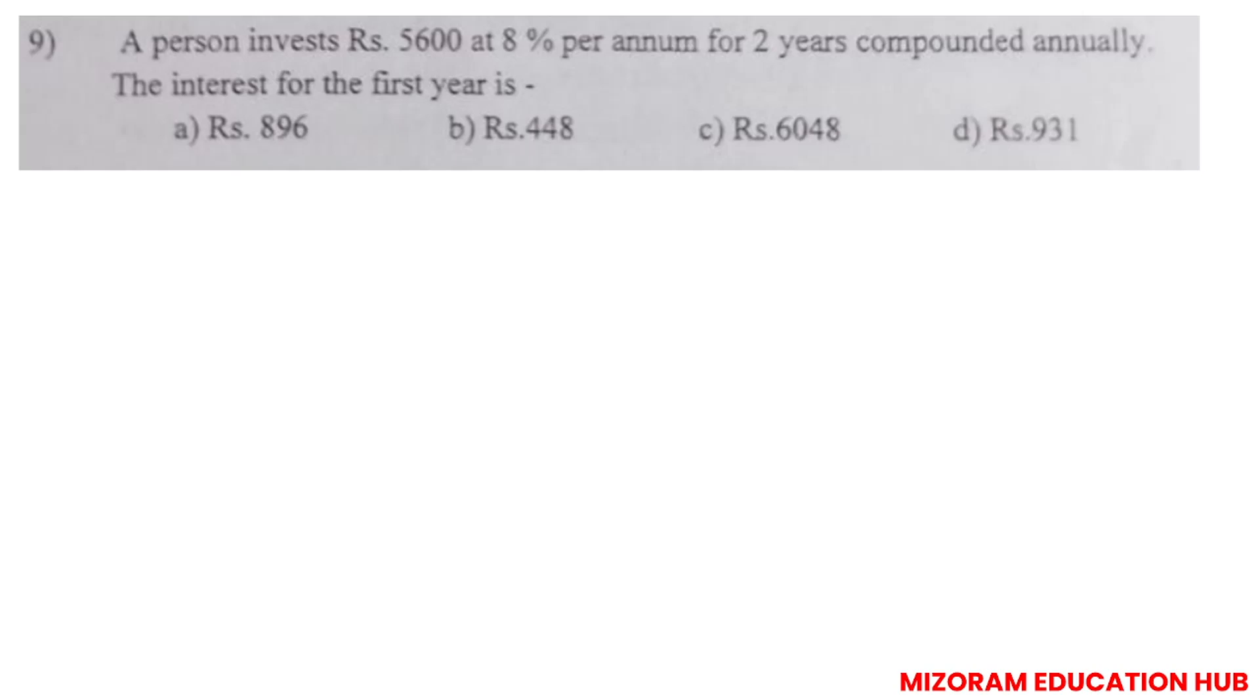But before starting, let's start section A. A person invests Rs. 5600 at 8% per annum for two years compounded annually. Interest for the first year - the concept was SI for the first year is always equals to CI for the first year. This is valid only for the first year.